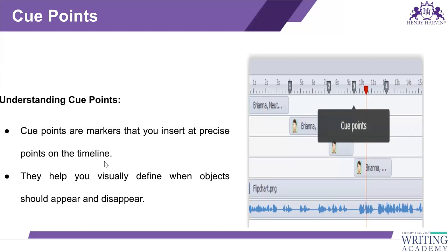Cue points are also called triggers. They help you visually define when an object should appear and disappear — when do you need a picture, when do you need to segment your research, what topic will come next. This is a topic which was out of the syllabus, but you should at least know about it.